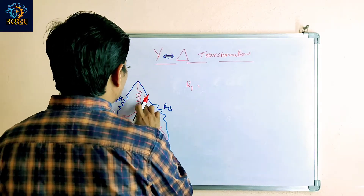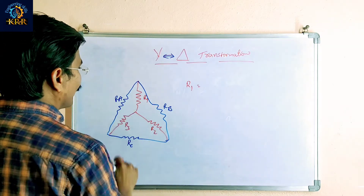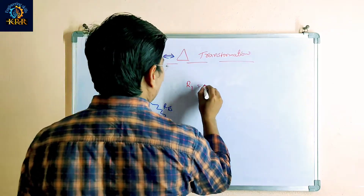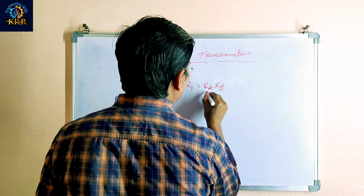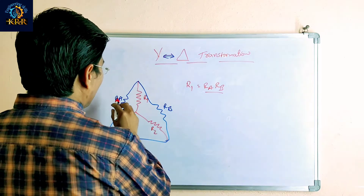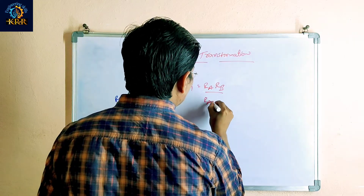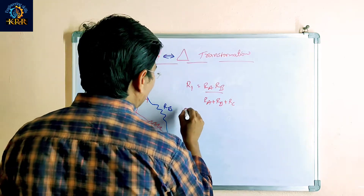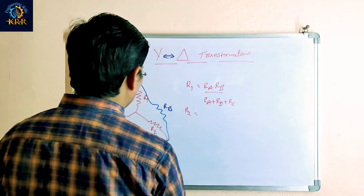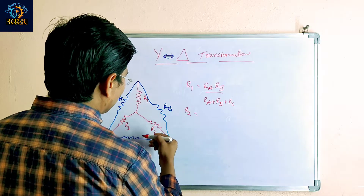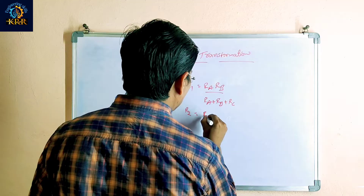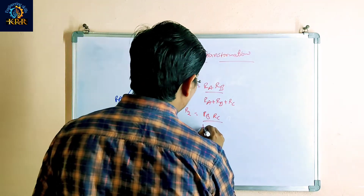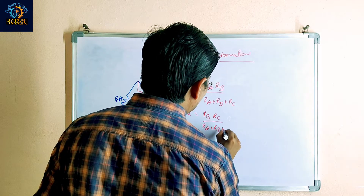R1 is equal to Ra into Rb divided by Ra plus Rb plus Rc. R2 is equal — this is the R2, the side branches — Rb into Rc divided by Ra plus Rb plus Rc.